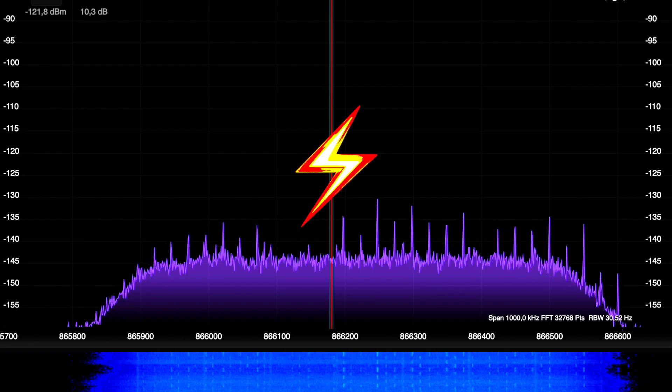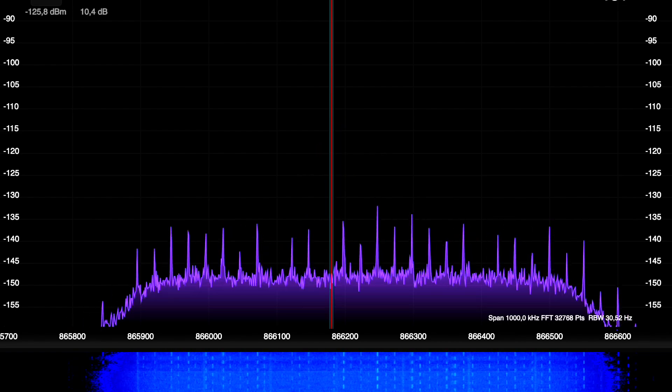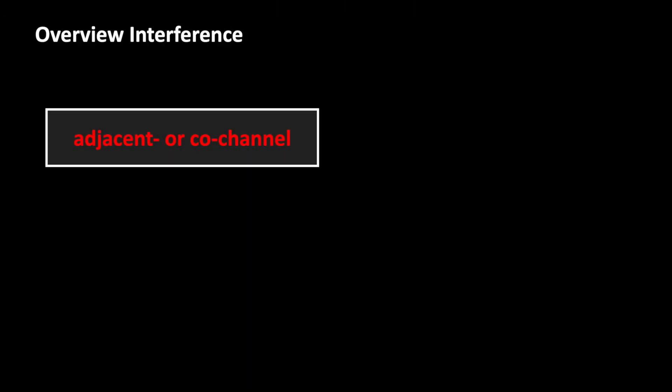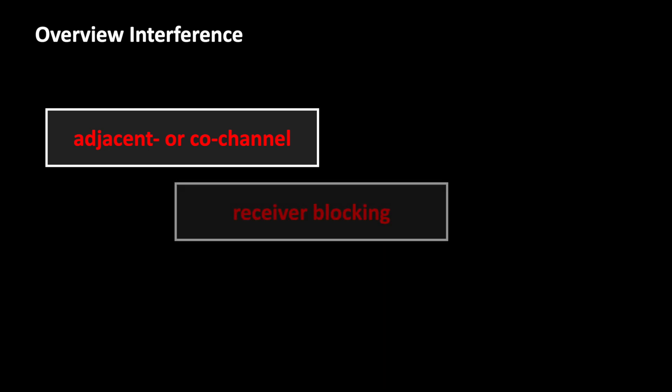It could be signals from a neighboring radio service operating on the same channel or unwanted emissions from an electronic device. Sometimes, the sun's radiation is interfering satellite communication and at low frequencies, atmospheric noise may disturb your signal.